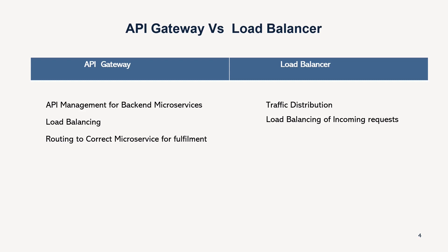API gateway also ensures that whatever request comes to it is routed to the correct microservice, because it has built-in routing logic that can be configured. API gateway is capable of routing the request to the correct API, but a load balancer is not concerned with any API management and has no such functionality.